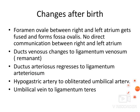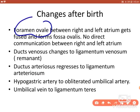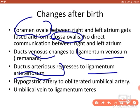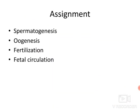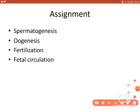After birth, the foramen ovale closes and forms the fossa ovalis. The ductus venosus and ductus arteriosus regress and form fibrous structures called the ligamentum venosum and ligamentum arteriosum respectively. The hypogastric artery obliterates and forms the obliterated umbilical artery. The umbilical vein forms the ligamentum teres. These are the changes that occur in the temporary structures which helped in fetal circulation.